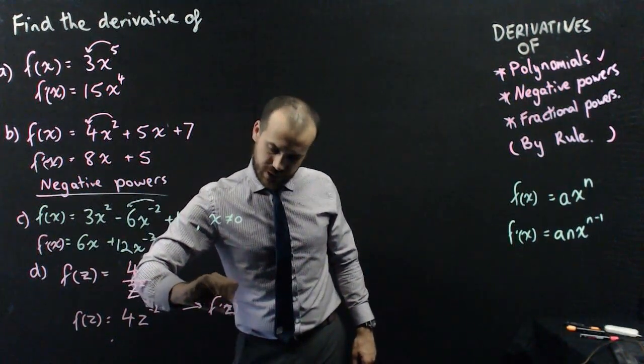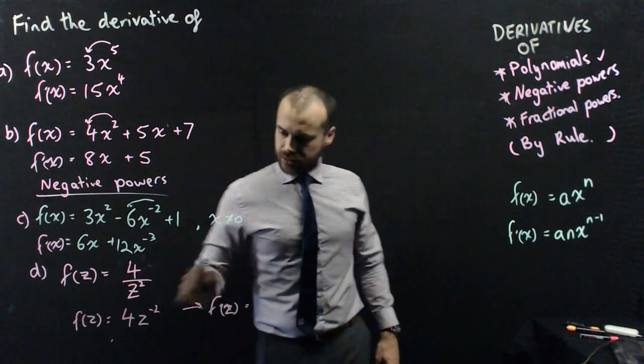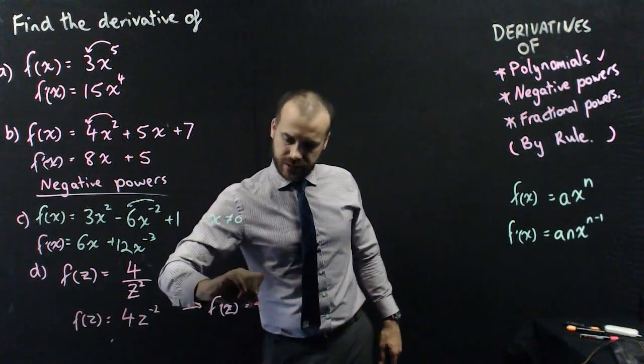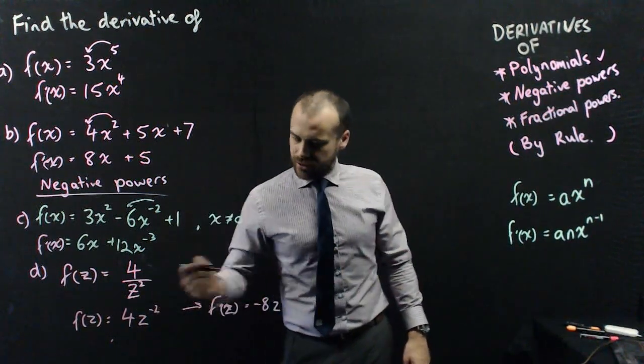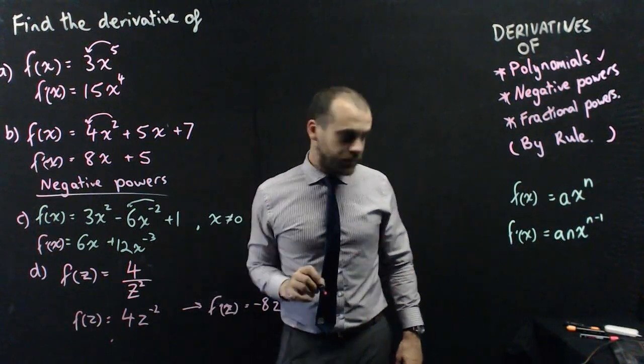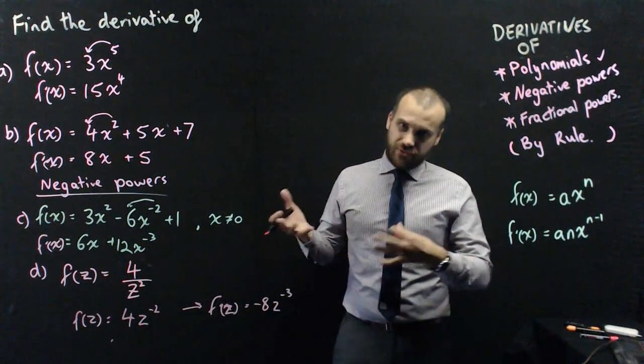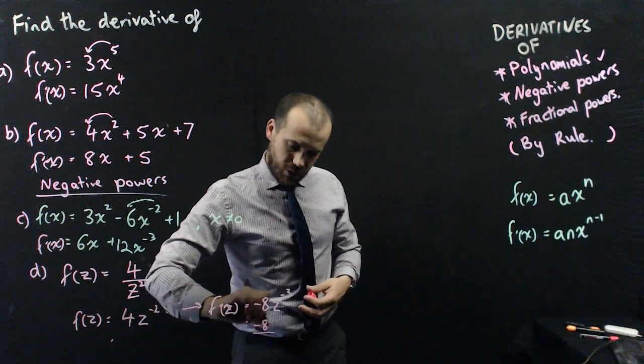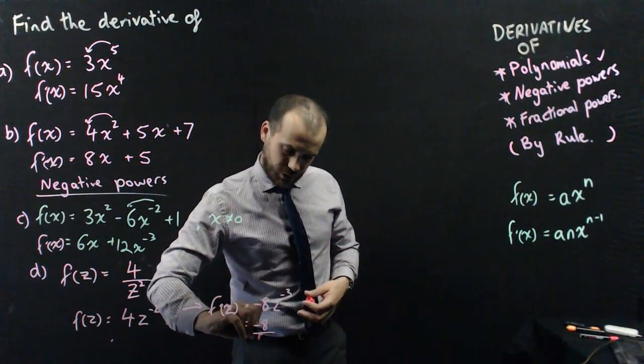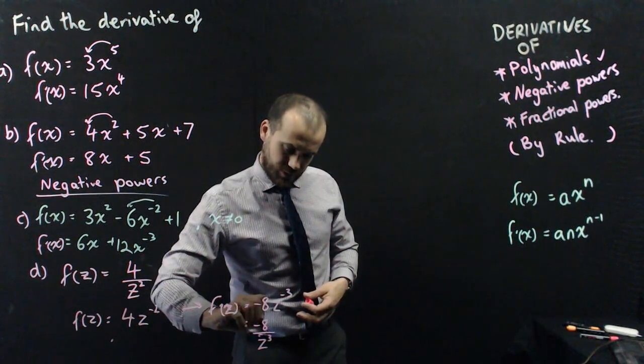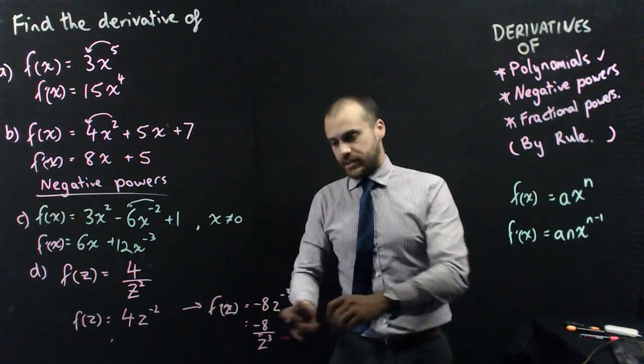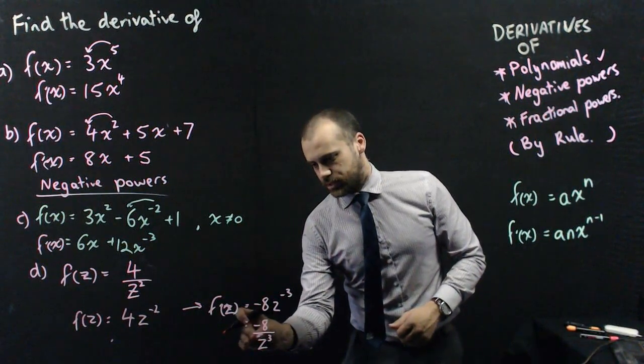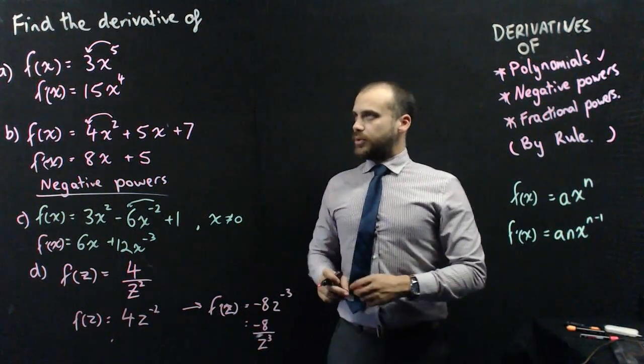And now that I see that it's 4z to the negative 2, I can now find the derivative. f dash z is equal to, now the negative 2 comes out. That becomes negative 8. Decrease the power by 1, negative 3. Now you should probably put it back how you found it. So it's negative 8 over z to the 3. So just moving that negative power back down to the bottom.